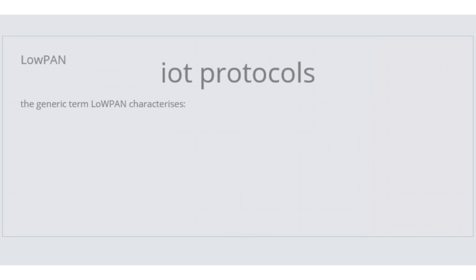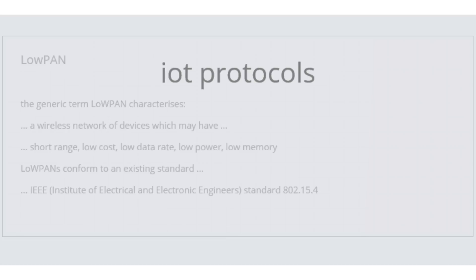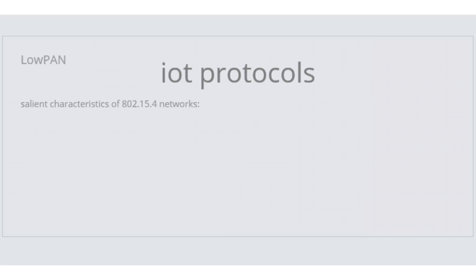The generic term LOPAN characterises a wireless network of devices which may have short range, low cost, low data rate, low power or low memory. LOPANs conform to an existing standard — IEEE, that is the Institute of Electrical and Electronic Engineers — standard 802.15.4. Salient characteristics of 802.15.4 networks include the following.